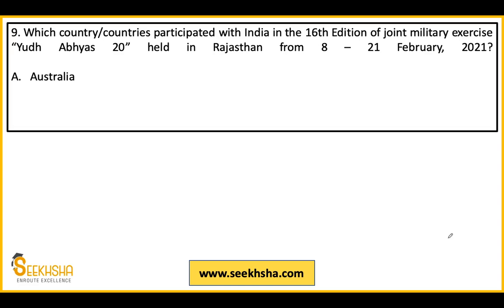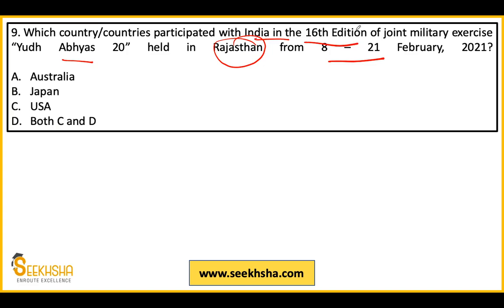Ninth question: Yudh Abhyas military exercise was held in Rajasthan in February 2021 — its 16th edition. Which country does India participate with in this exercise? The answer is option C — United States of America.